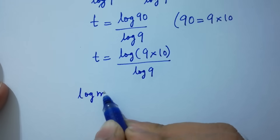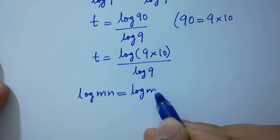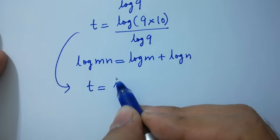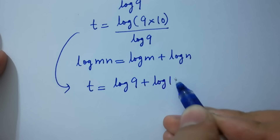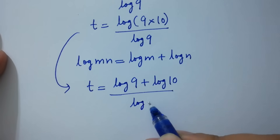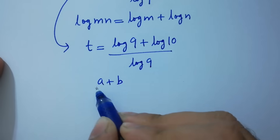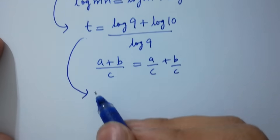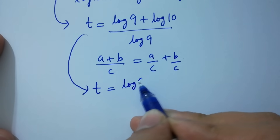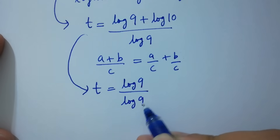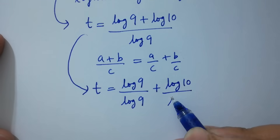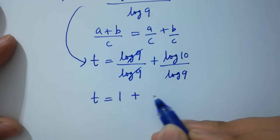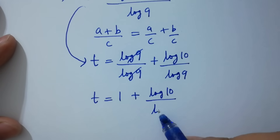Using log(mn) equals log m plus log n, t equals (log 9 plus log 10) over log 9. Since a plus b over c equals a over c plus b over c, we get t equals log 9 over log 9 plus log 10 over log 9. Log 9 and log 9 cancel, giving t equals 1 plus log 10 over log 9.